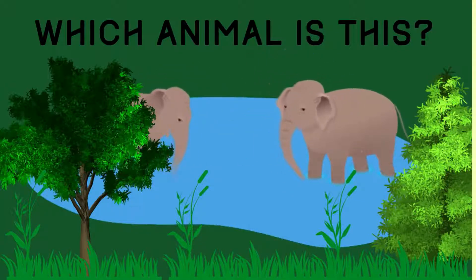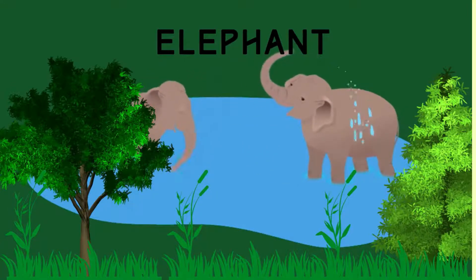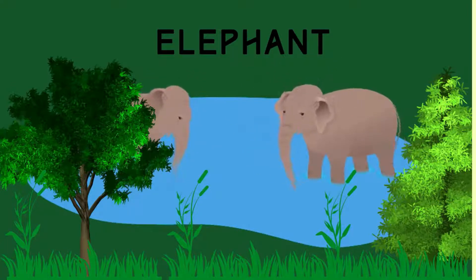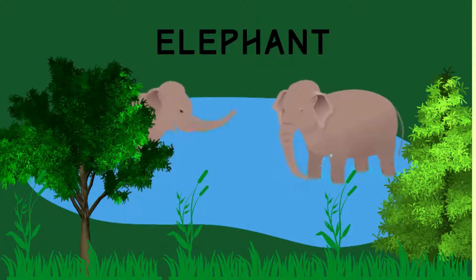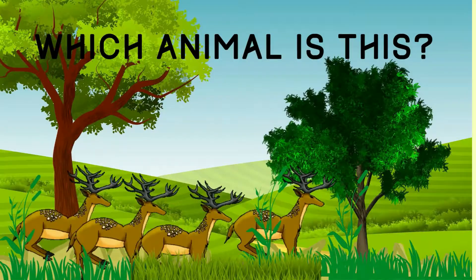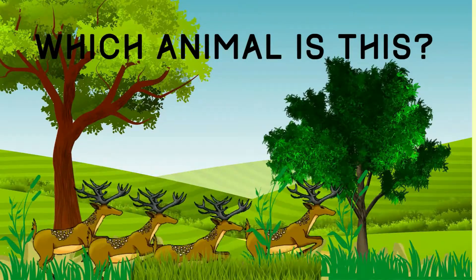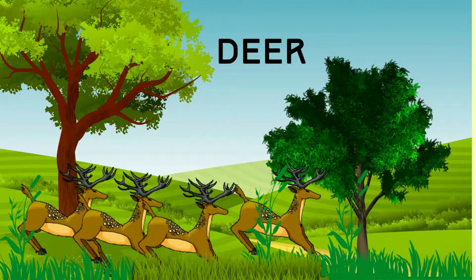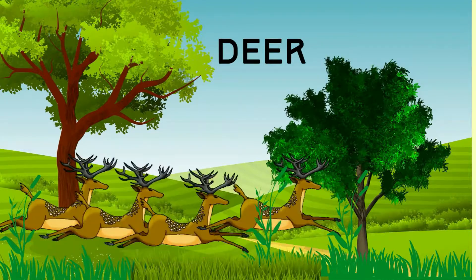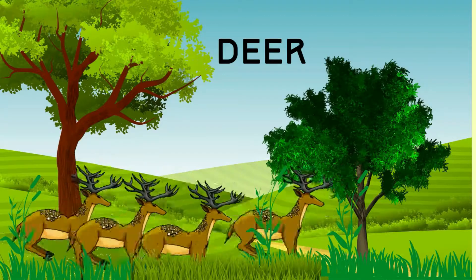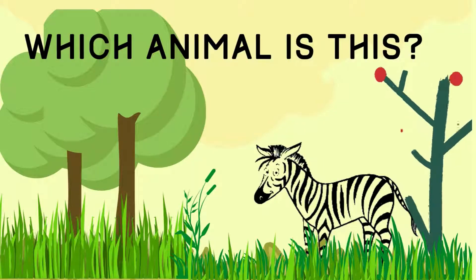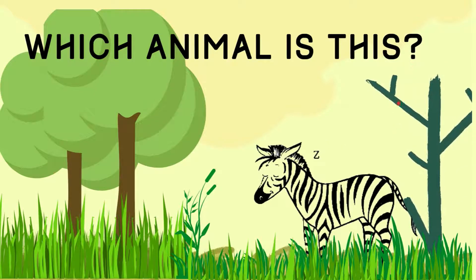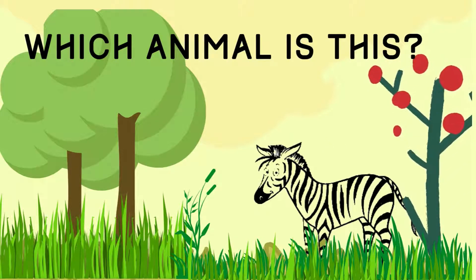Which wild animal is this? This is an elephant! Elephants are so huge. Elephants are playing in water. Hey children, which animal is this? This is a deer! Deer runs very fast.